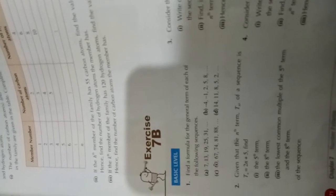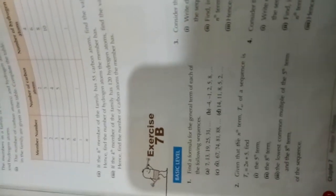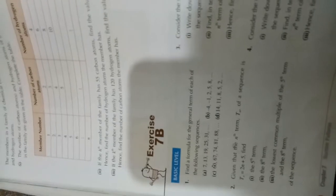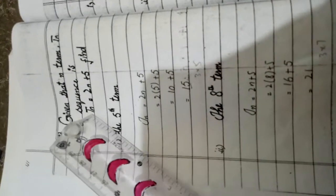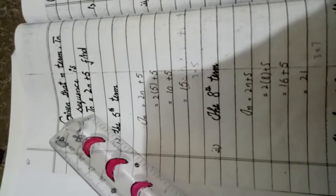Assalamu alaikum, this is class 6, exercise 7B, question number 2. Given that the nth term tn of a sequence is tn equals 2n plus 5, find part 1: the fifth term, and part 2: the eighth term.